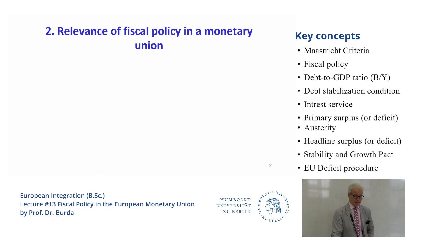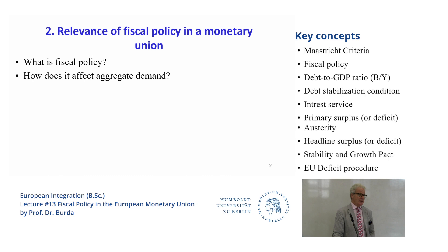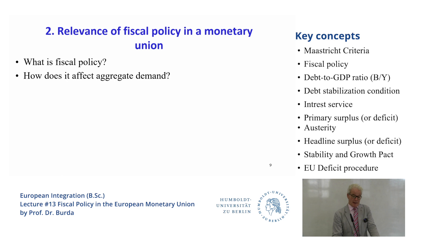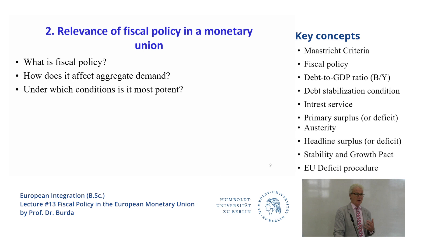Fiscal policy is important because it affects aggregate demand in the short run. It might be useful in the case of a pandemic to coordinate because all countries were hit by the same shock, but here I'm talking about a region or country hit by an asymmetric shock that needs asymmetric fiscal policy. In a flexible exchange rate regime it's less potent; in a fixed exchange rate regime, more so — but a very open economy will also have a fairly impotent fiscal policy because the multiplier is so low. It would be most effective if all regions act at the same time.